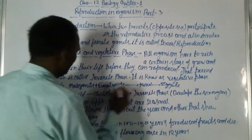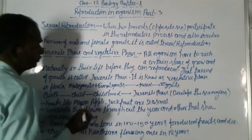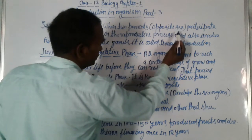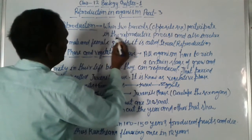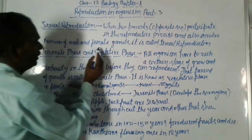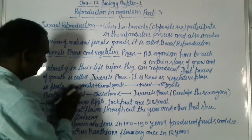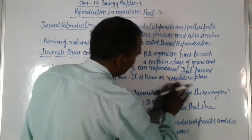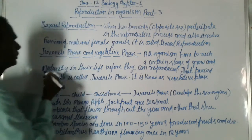In this process, two parents are involved — male and female — and they produce male and female gametes. So we can say that when two parents of opposite sex and male and female gametes participate in the reproductive process, and also involve fusion of male and female gametes, it is called sexual reproduction. I hope you understand this definition.